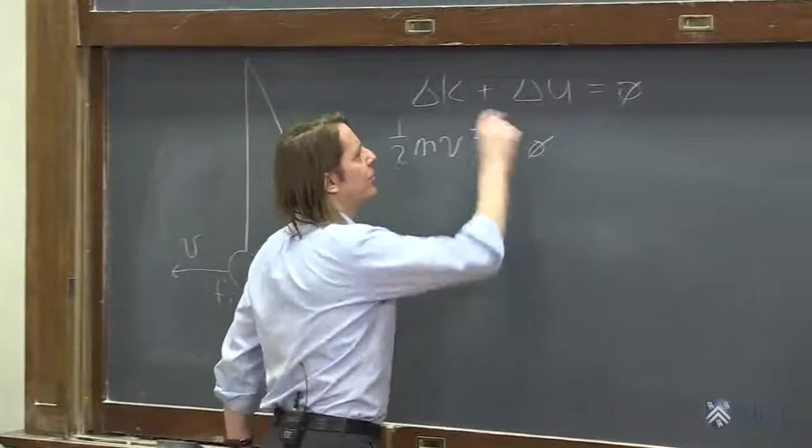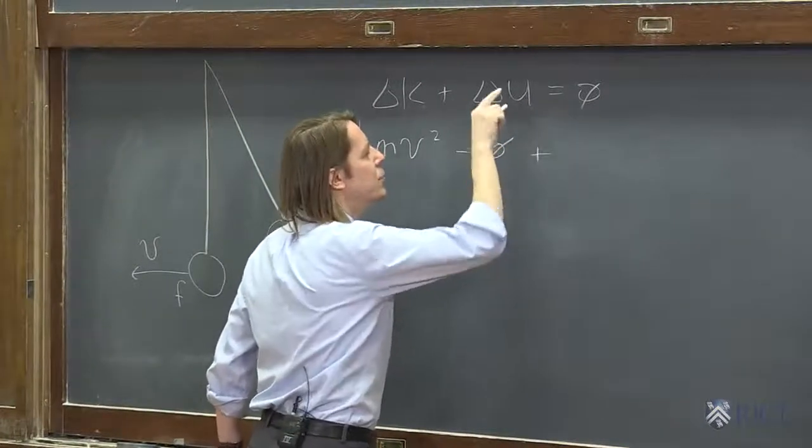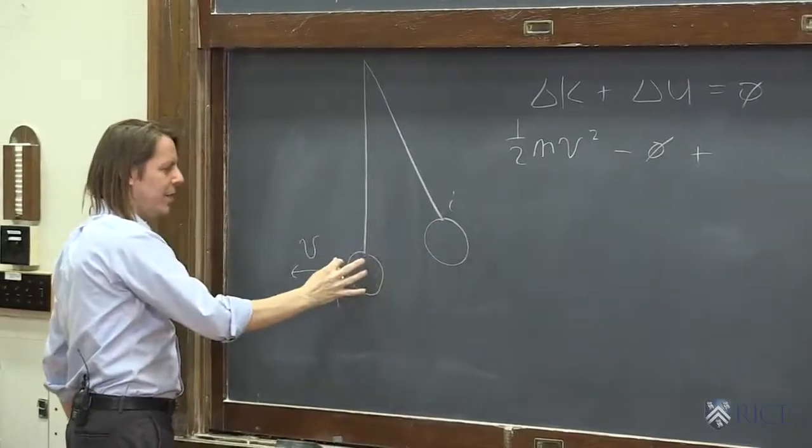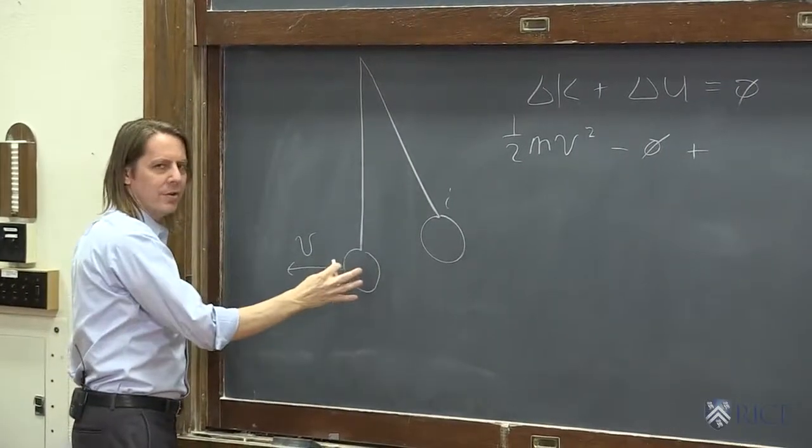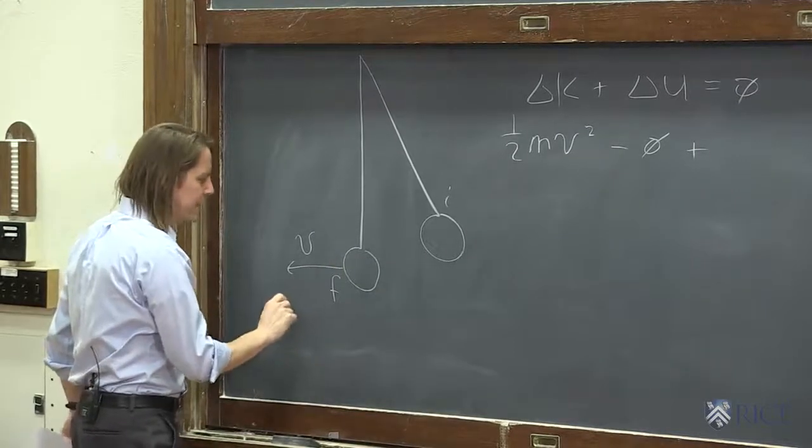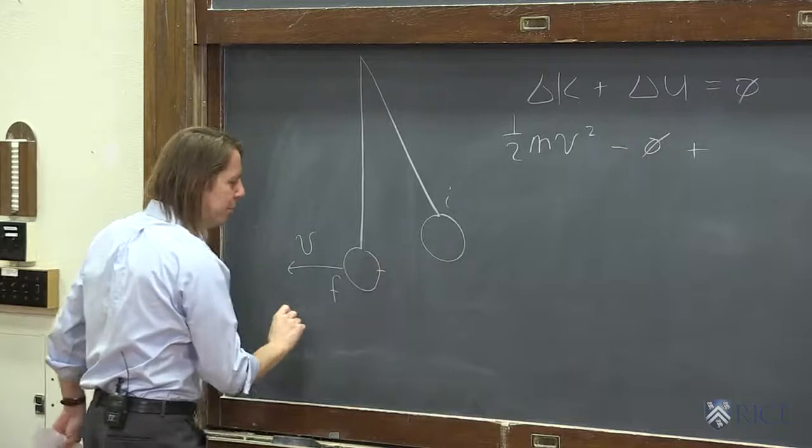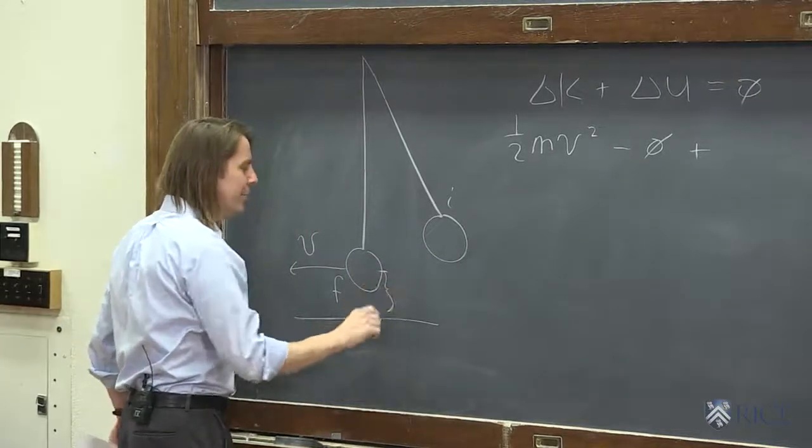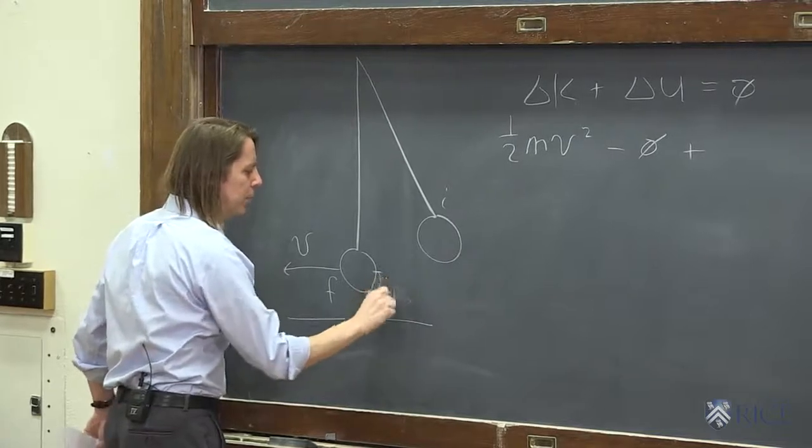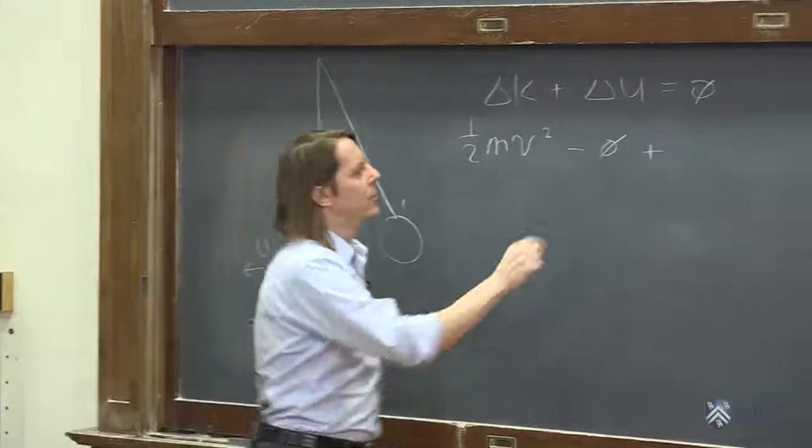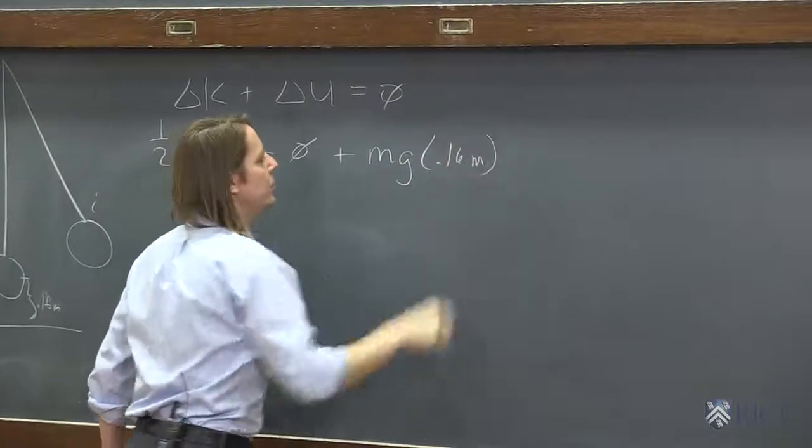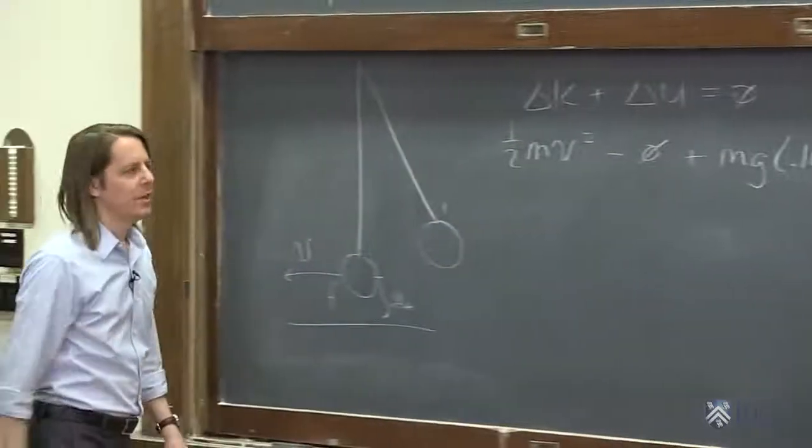Plus u final. So the potential energy final, I'm going to let it be down. That's its lowest point is what we're considering. And I'm going to measure, I've already measured, the height of the bowling ball, the center of the bowling ball above the ground or above the table is 0.16 meters. So this one would be mg 0.16 meters. We'll just use the y position above the table.